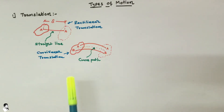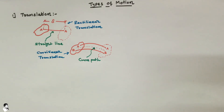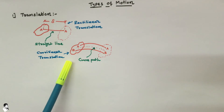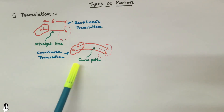Due to the curve line motion, this is known as curvilinear translation. In the study of mechanics, motion of particles in rectilinear translation is referred to as linear motion, and curvilinear translation is referred to as curvilinear motion of a body.